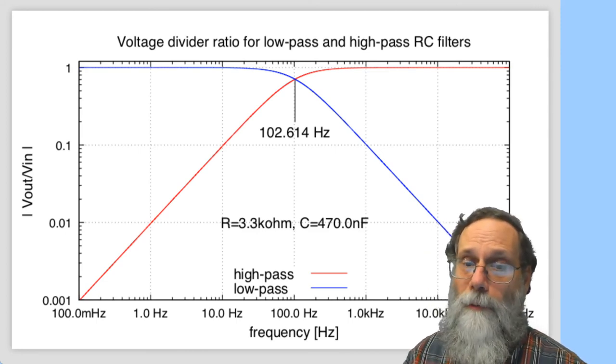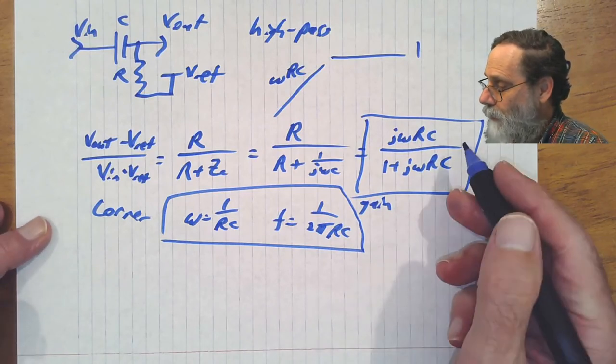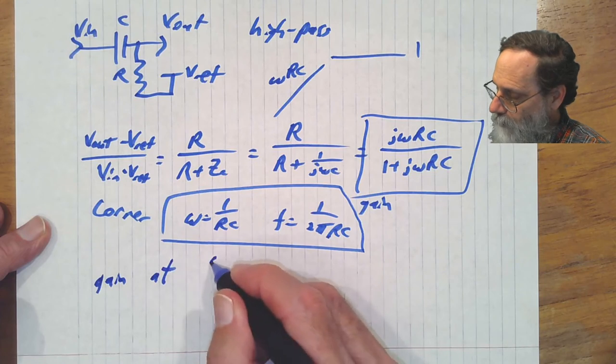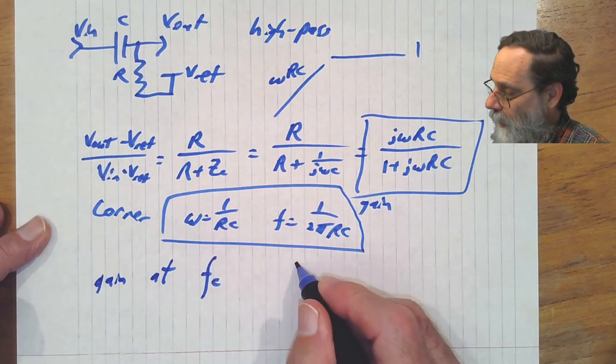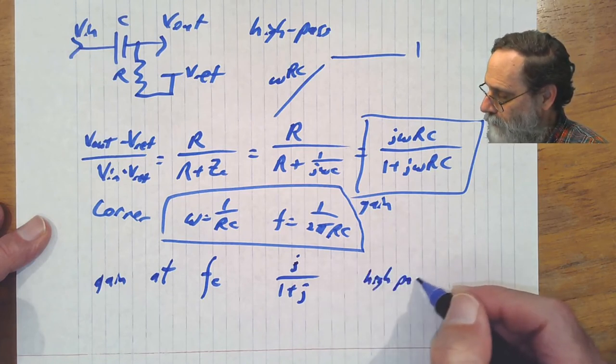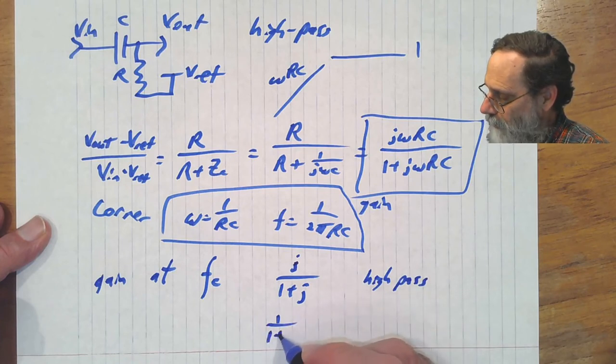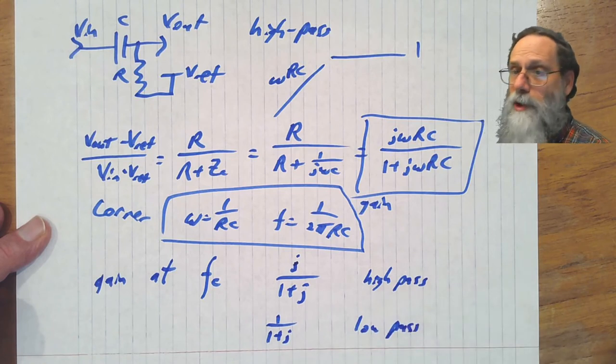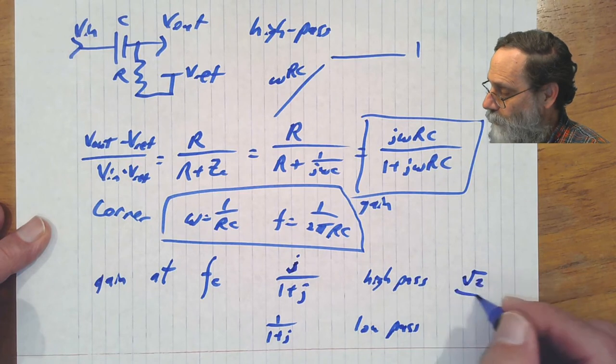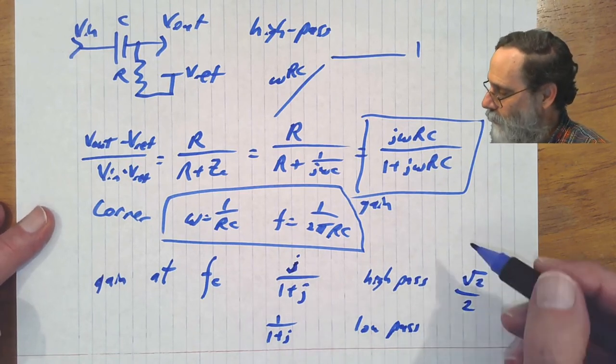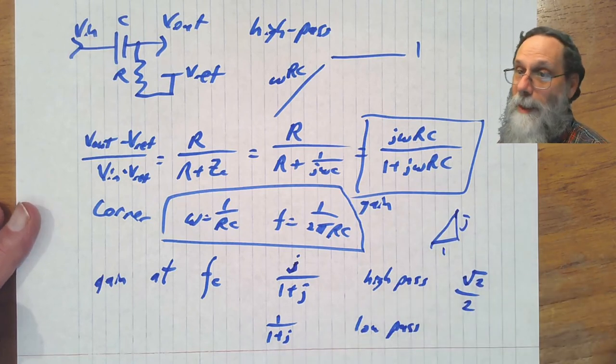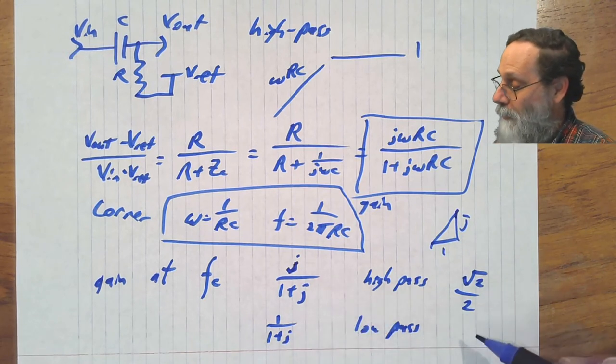In fact, we can compute exactly what that rounding is at the corner frequency, because at the corner frequency, we've got that ωRC equals 1. So the gain at the corner, we often abbreviate the corner frequency as fc, is going to be j over 1 plus j for the high-pass and 1 over 1 plus j for the low-pass. And if you just take the magnitude of either of these, the magnitude of either of these is going to be square root of 2 over 2. And you can get that from Pythagoras' theorem, because what you're looking at is 1 and j. So it's 1 over square root of 2 for the magnitude of this thing on the bottom. Sorry, square root of 2 for the thing on the bottom, 1 over square root of 2 for the overall gain.